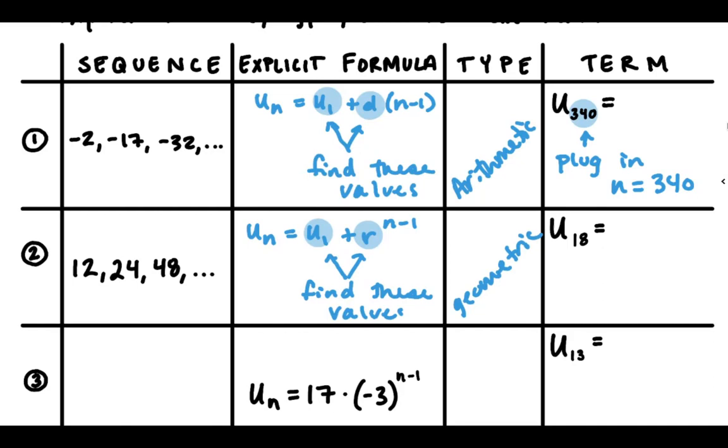And for the term, same thing. That subscript is our term number which is n. So you're going to plug in n equal to 18 in the formula.